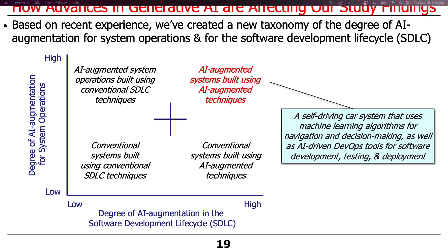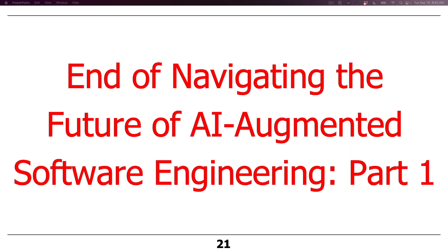The pinnacle — the holy grail — is AI-augmented systems built using AI-augmented techniques. You might have a self-driving car that uses machine learning algorithms to navigate, decide whether to stop at a light, or avoid hitting another car, and it could use AI-driven DevOps for developing, testing, and deploying the software. We won't talk much about this upper quadrant today, though it is indeed the future. That's the end of the first part — an overview of the landscape of AI-augmented software engineering.